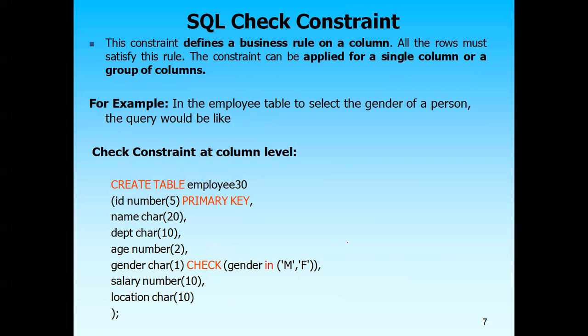The next is the check constraint. The check constraint is used for applying a business rule to a column. For example, the best example is: if you want to apply a business rule for a banking application, the minimum balance should be 500 in the account. That constraint of minimum balance you can apply while creating the table itself with the help of check constraints.